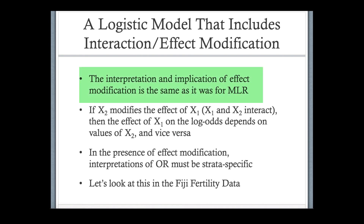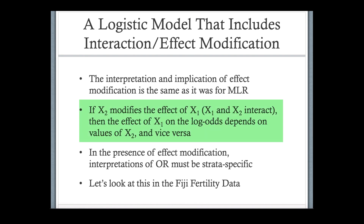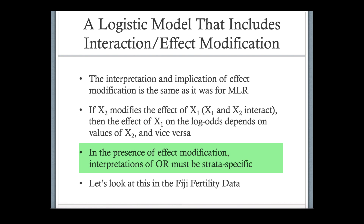Just a reminder about the implication of effect modification: what does it mean? It's the same as it was in multiple regression — the concept is the same. The only thing changing here is we're looking at a categorical yes/no outcome variable rather than a numeric one. If we're looking at what effect x1 has on y, and some other variable x2 modifies that effect, we'd say that x1 and x2 interact and that the effect x1 has on y changes depending on the value of x2.